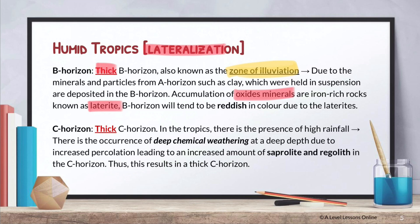Lastly, the C horizon in the humid tropics is a very thick C horizon. In the tropics, with high rainfall, there is actually deep chemical weathering — you can refer to Strachov's diagram for this — whereby intense percolation and infiltration result in an increased amount of deep chemical weathering. As a result, this produces saprolite and regolith in the C horizon, hence a very thick C horizon.